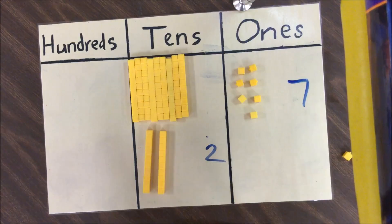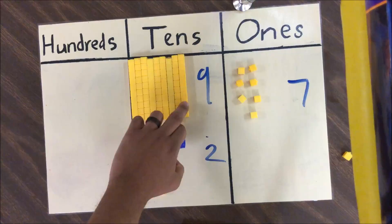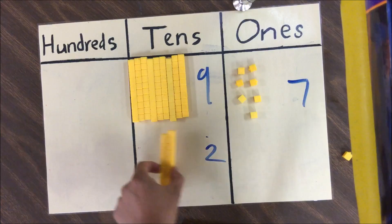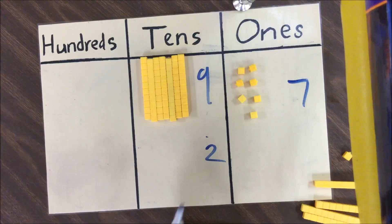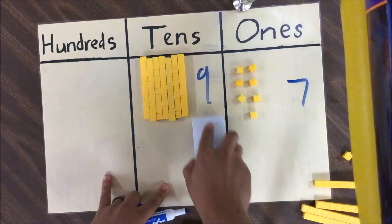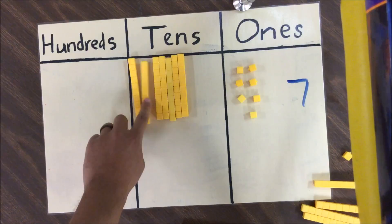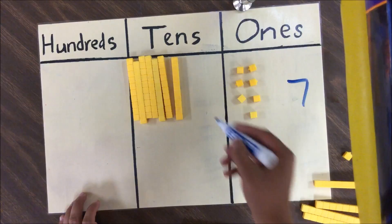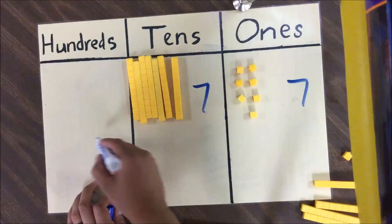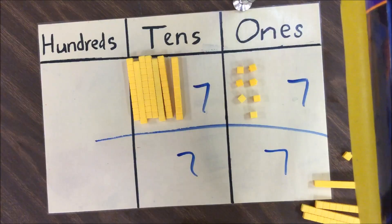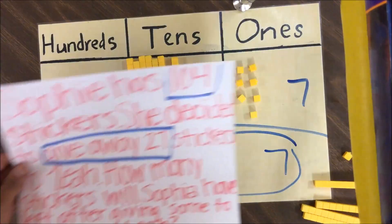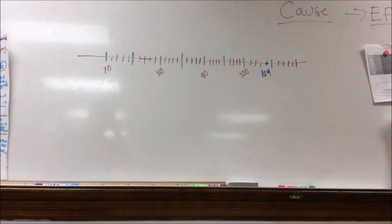Moving over to the tens place, we now have value there: 1, 2, 3, 4, 5, 6, 7, 8, 9 rods, and we're going to subtract 2 from that. We grab 2 pieces here and 2 pieces to remove — no more twos. Counting what remains: 1, 2, 3, 4, 5, 6, 7 pieces — so we write 7 in the tens place. We have 7 in the tens and 7 in the ones, giving a final total of 77. These are the remaining stickers Sophie will have after giving away 27 to Leah.